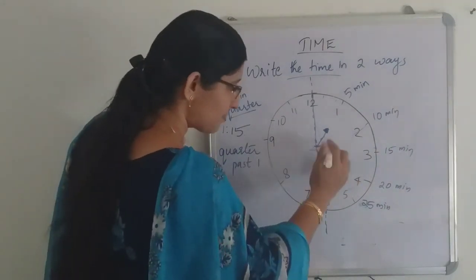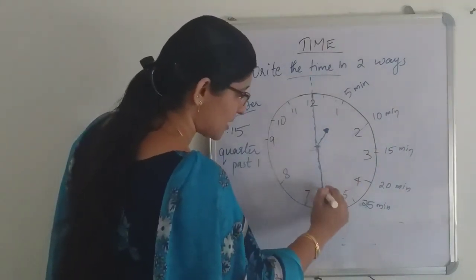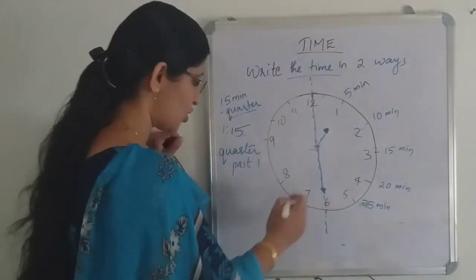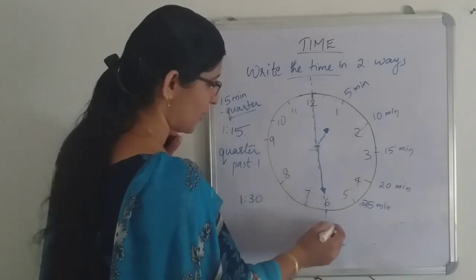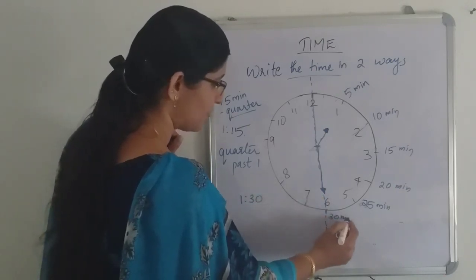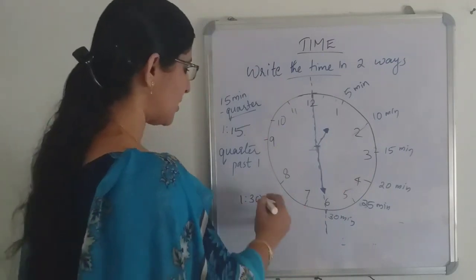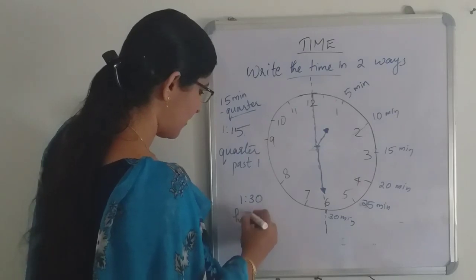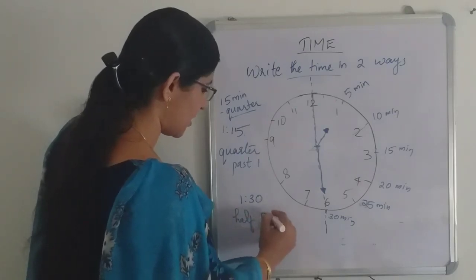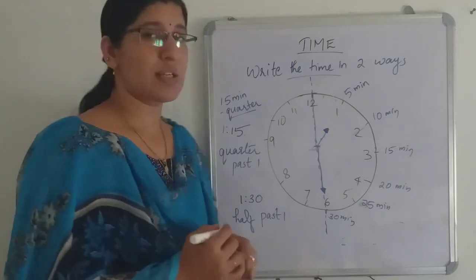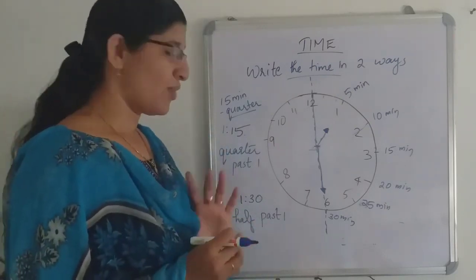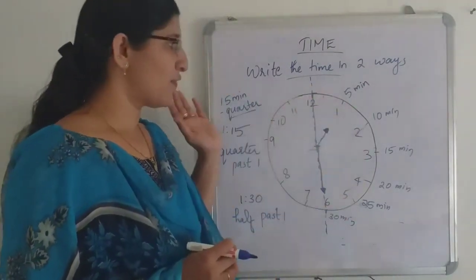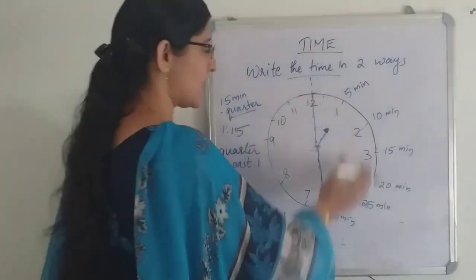Whenever the minute hand leads to 6, that is 30 minutes — 6 × 5 = 30 — and 30 is half of the clock. So whenever 30 minutes has come, we write 'half past.' The time 1:30 is written as 'half past 1.'